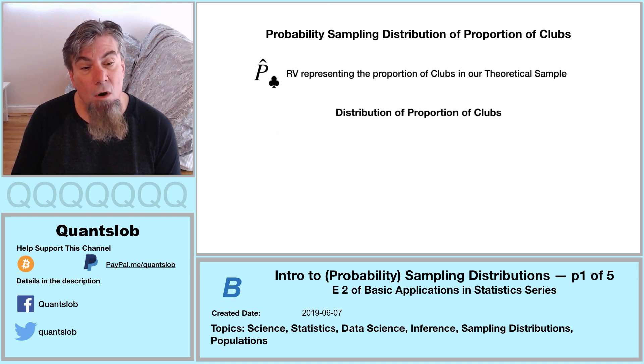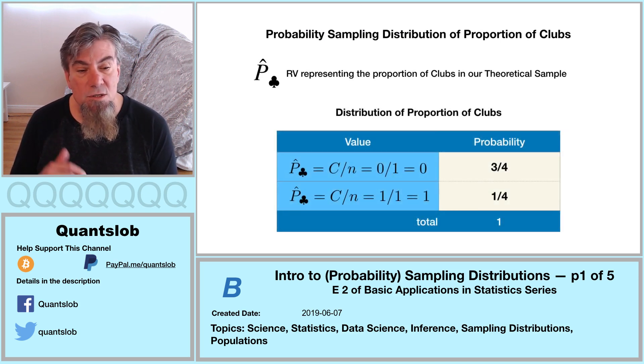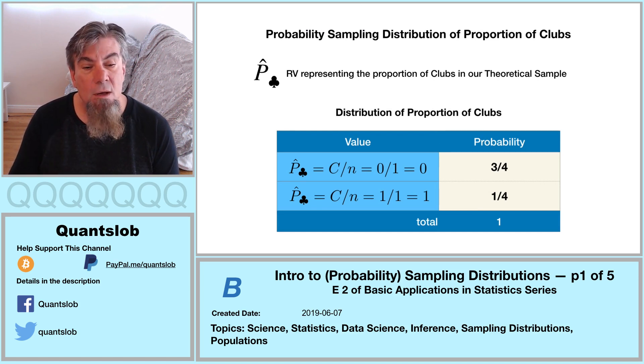So we've come this far. We may as well take it all the way. We can easily convert the sample number of clubs into sample proportion of clubs. We accomplish this simply by dividing by the sample size. In this case, the sample size is one. So this is quite easy to deal with.